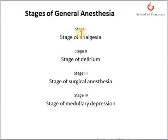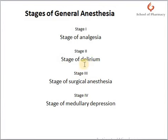This first stage is related to analgesia. The second stage is the stage of delirium, which extends from the loss of consciousness through a period of irregular breathing to the re-establishment of regular breathing and respiration. The patient may laugh, vomit, or even struggle, and for this reason it is also known as the stage of excitement.